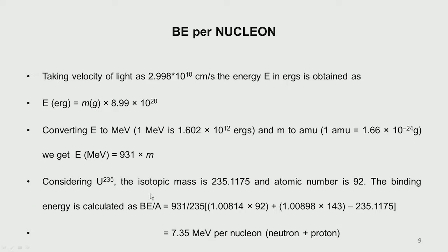Let us consider U-235, a very common fissile atom. Its mass is 235.1175 AMU and its atomic number is 92. Calculating the binding energy using the formula, it comes out to about 7.35 MeV per nucleon, where a nucleon means a neutron or proton. So the binding energy per nucleon of uranium-235 is 7.35 MeV.